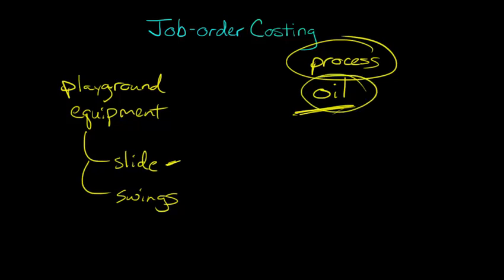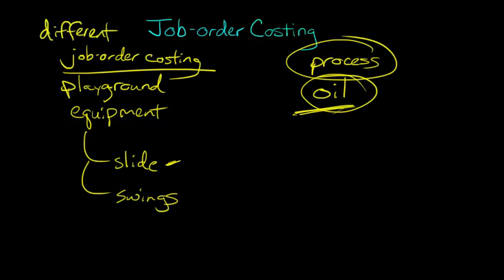Oil, we'd be talking about a process costing system, which we'll deal with in another video. But something like playground equipment or any kind of firm that's dealing with different products, we've got job order costing. The idea is, what kind of product? Is it homogeneous or is it different? For different products, we're going to use job order costing.